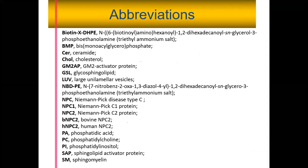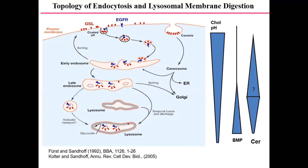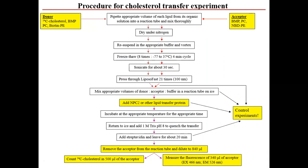Looking at typical endocytosis in the lysosomal membrane digestion, you discover that cholesterol is more at the membrane ends and reduces as you go into the inner cell. Whereas BMP, one of the phospholipids, increases as you go inside. We decided to prepare liposomes that replicate what you have within the body system. We made sure the composition looks like what you have in the body system, though we cannot replicate it exactly.